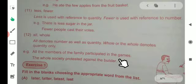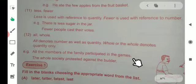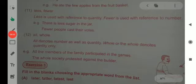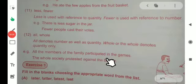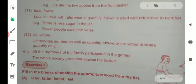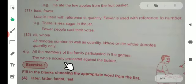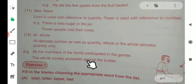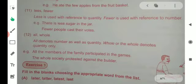All the members of the family participated in the games. All the family members participated in the games. The whole society protested against the builder. The entire society opposed the builder. So whole is used only with quantity.